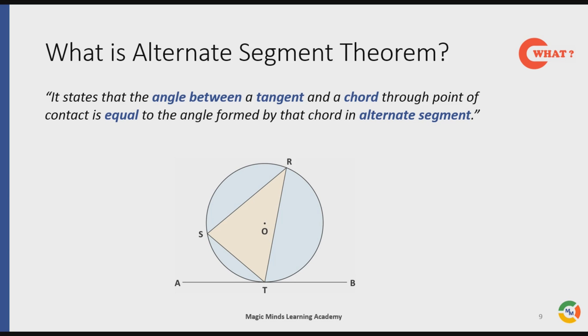So the theorem says that the angle between the tangent AB and the chord through point of contact T, that is chord RT, so angle between AB and RT through point T which is angle BTR, this angle is equal to the angle formed by the same chord in alternate segment, that is angle TSR. This means angle BTR is equal to angle TSR.